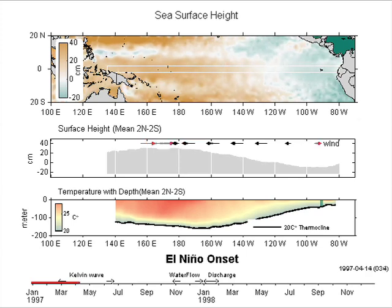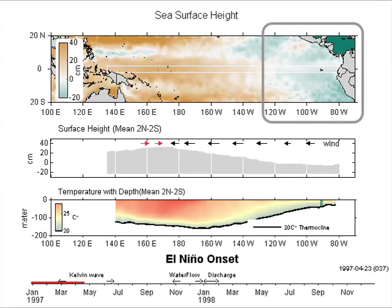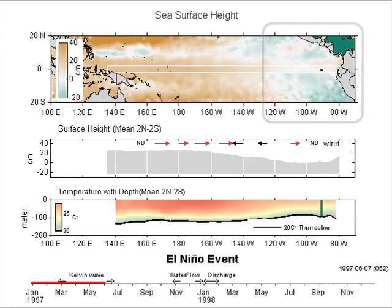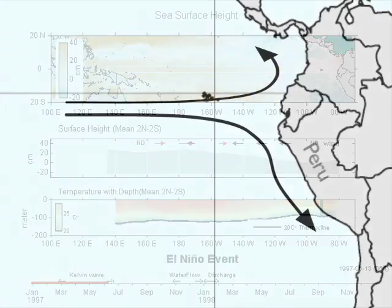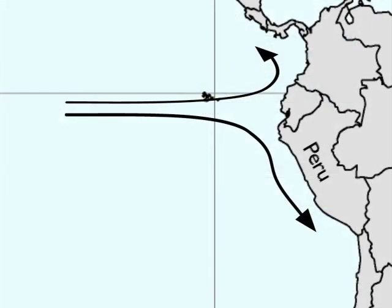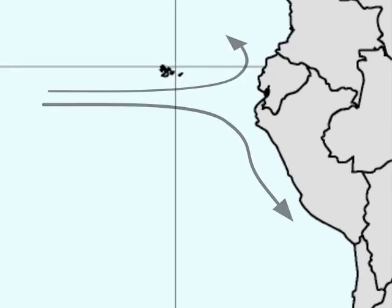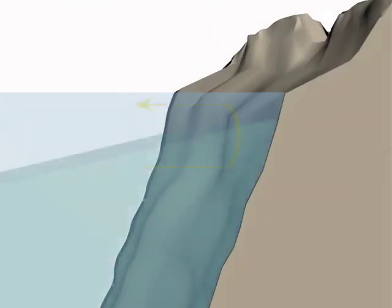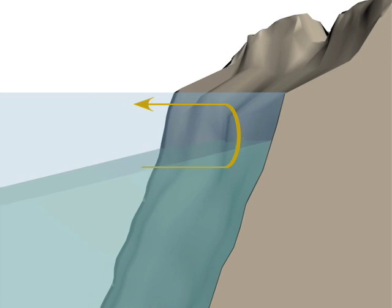As each Kelvin wave hits the coast of South America, it divides and propagates along the north and south coastline. The speed of the Kelvin wave around the Peruvian coast is roughly 200 kilometers per day. The Kelvin wave depresses the 20 degrees Celsius thermocline near Peru just as it depresses the 20 degrees Celsius thermocline in the equatorial region.